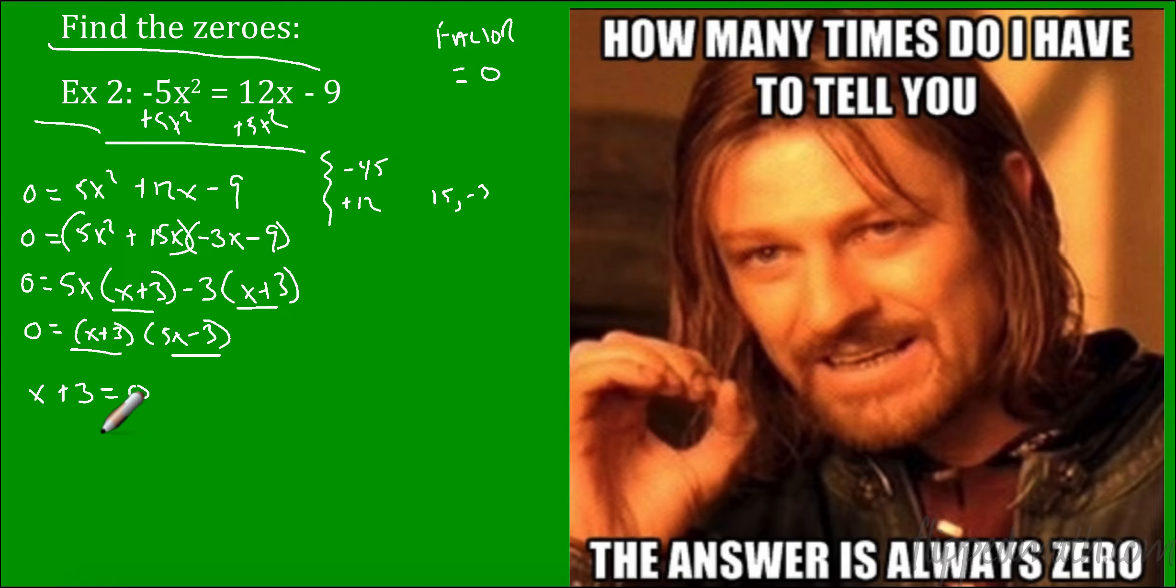So now I need to set each of these things equal to 0 so I know what my answers could be. So x plus 3 could equal 0. Subtract 3 and I'd get x is negative 3. 5x minus 3 could equal 0. Add 3, 5x equals 3. Divide by 5, x equals 3 fifths. So there we have it. Those are our two zeros of that polynomial equation. Let's try another one.